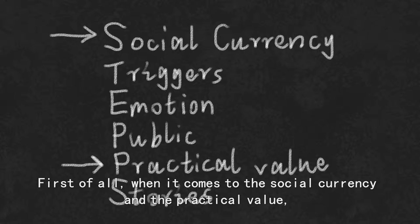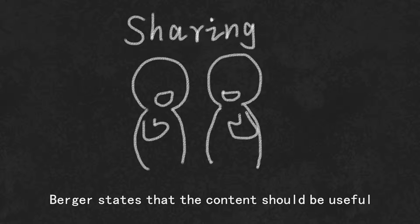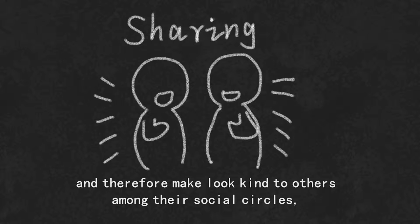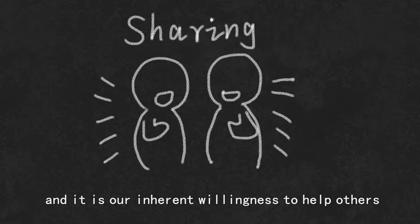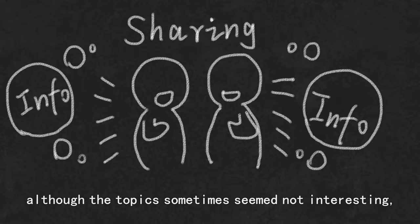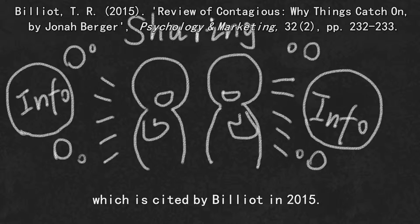When it comes to social currency and practical value, Berger states that the content should be useful and make consumers believe that their sharing will benefit others, and therefore make them look keen to others among their social circles. It is our inherent willingness to help others that drives the public communication of information, although the topics sometimes seem not interesting, which is cited by Baylord in 2015.